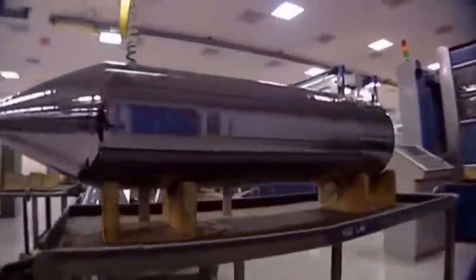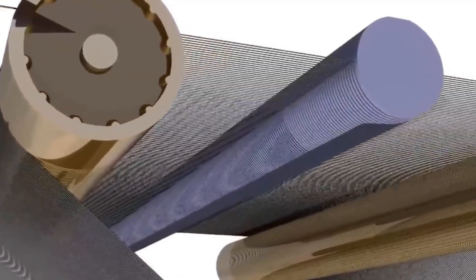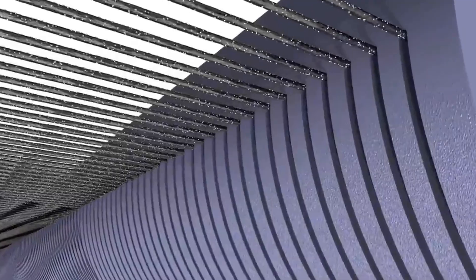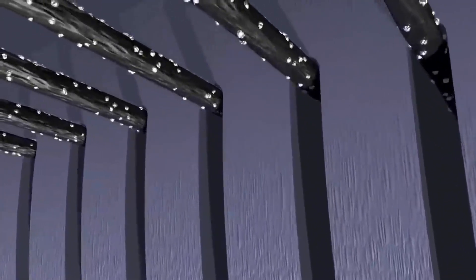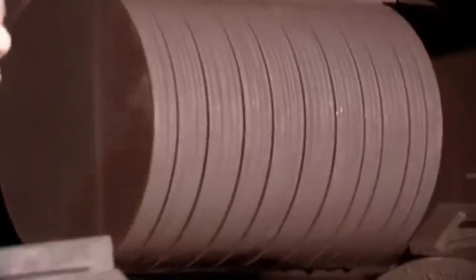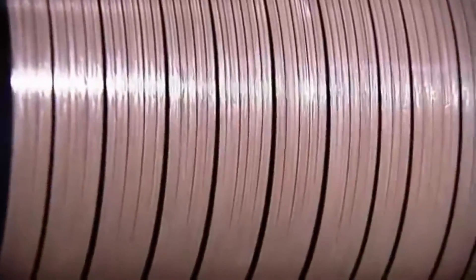However, this ingot is not used as it is. It is sliced into extremely thin wafers, less than 1 millimeter thick, using special saws that look like ultra-precise wires. These slices, called wafers, are the foundation of microchips, but before they can be used, they must be polished until they are smoother than glass. This polishing is done with specialized machines and chemicals, because even a microscopic scratch or a speck of dust could ruin the entire process.